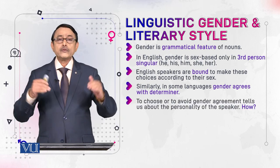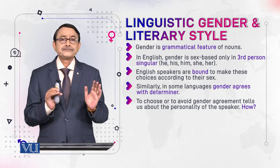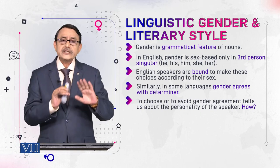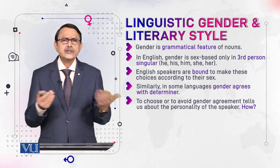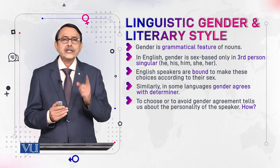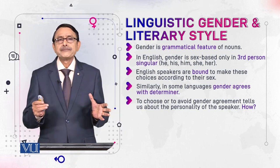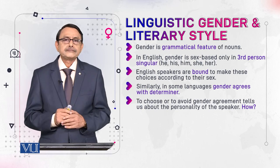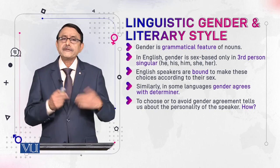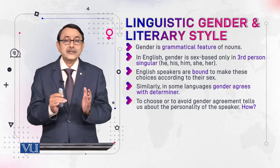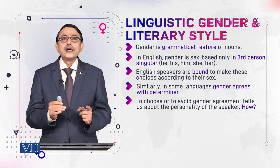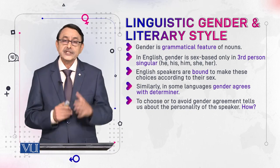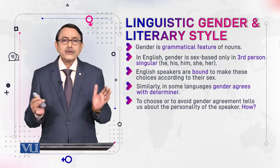To choose or to avoid gender agreement — now you have this choice. You know this is the gender system of your language. Whether you remain bound and follow the gender system, or you violate it — your choice would create different effects on the reader, and this is where style of literature and gender are interlinked with each other. This is the point where we would see whether they are related or not.